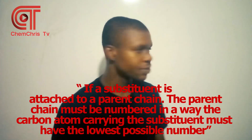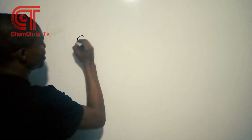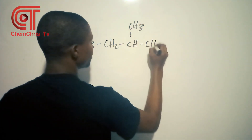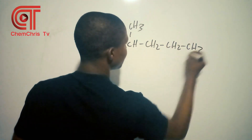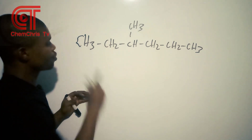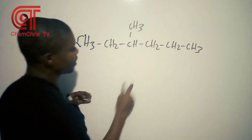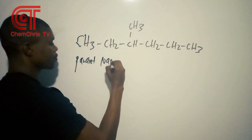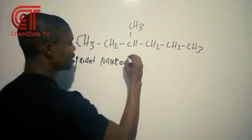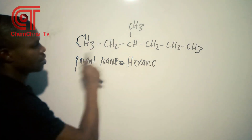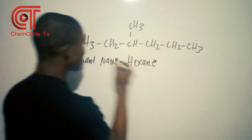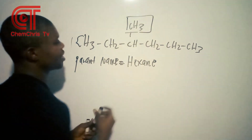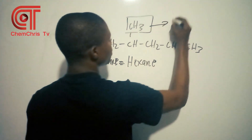For example, if you have CH3, CH3, CH2, C, CH3, H, CH2, CH2, CH2, CH3 — let's take the longest chain here: 1, 2, 3, 4, 5, 6. The parent name is hexane since there are six carbons. The branch point not counted in the main chain is my substituent, which is a methyl group.